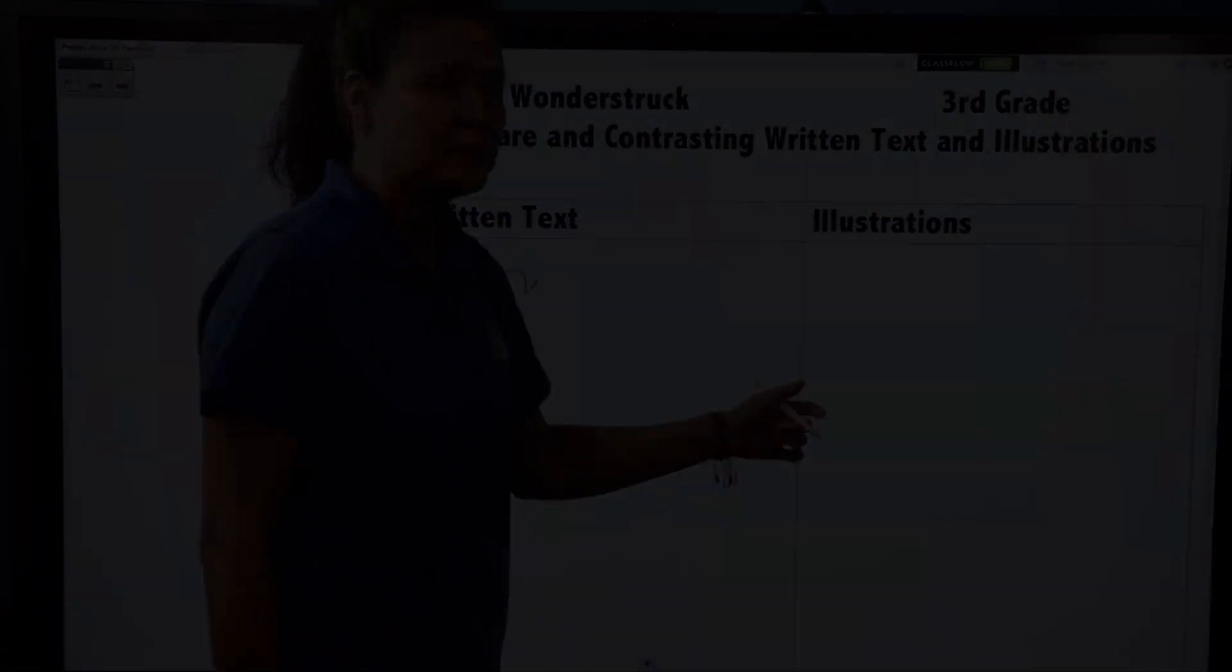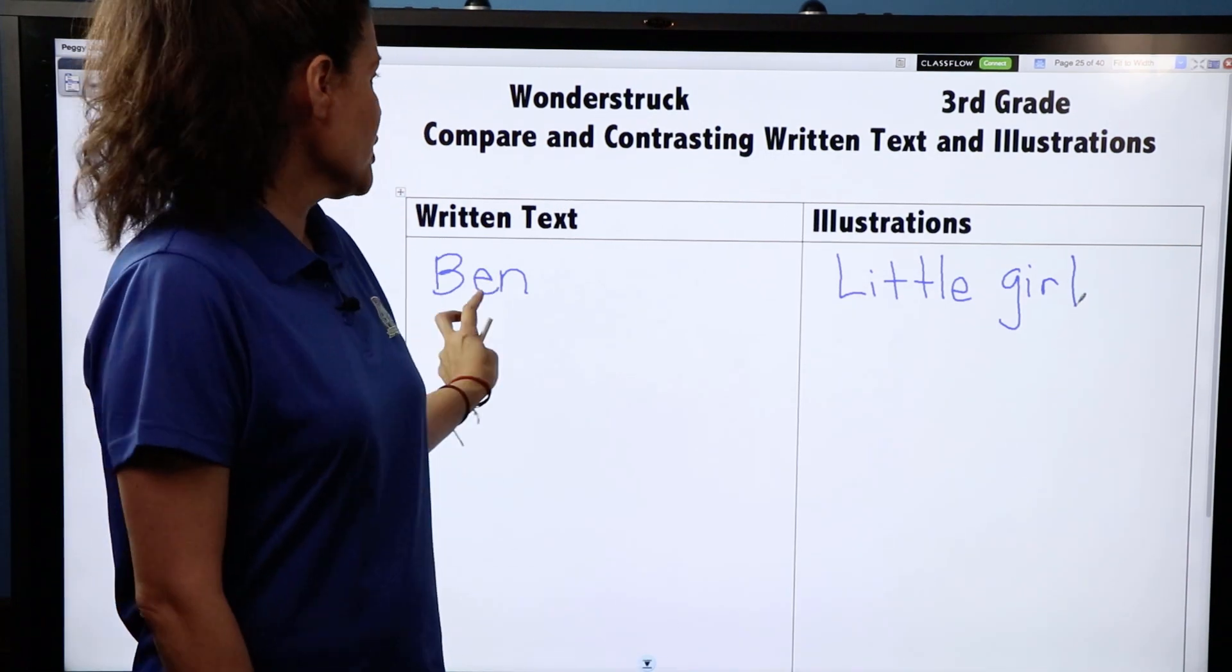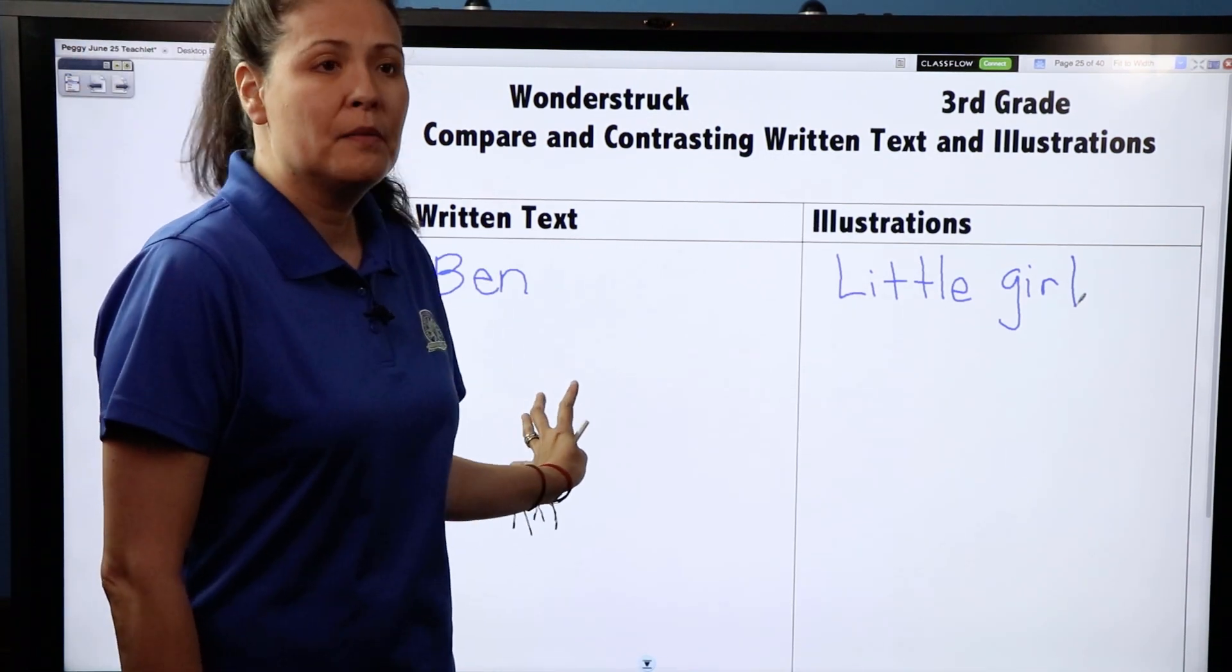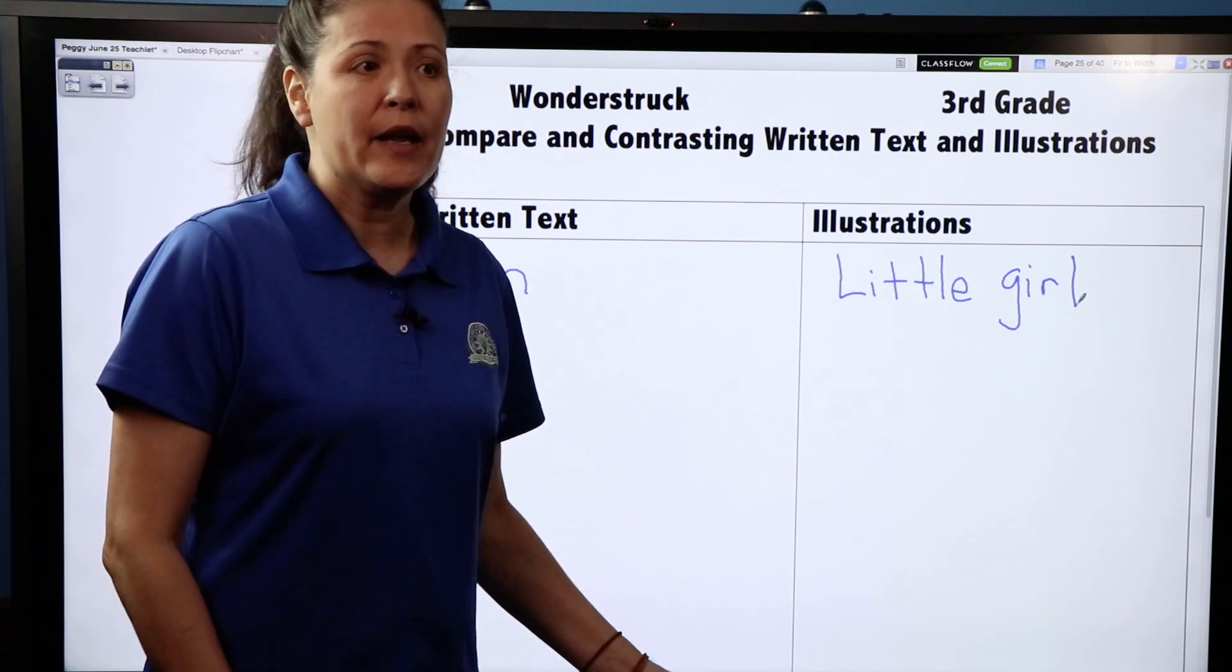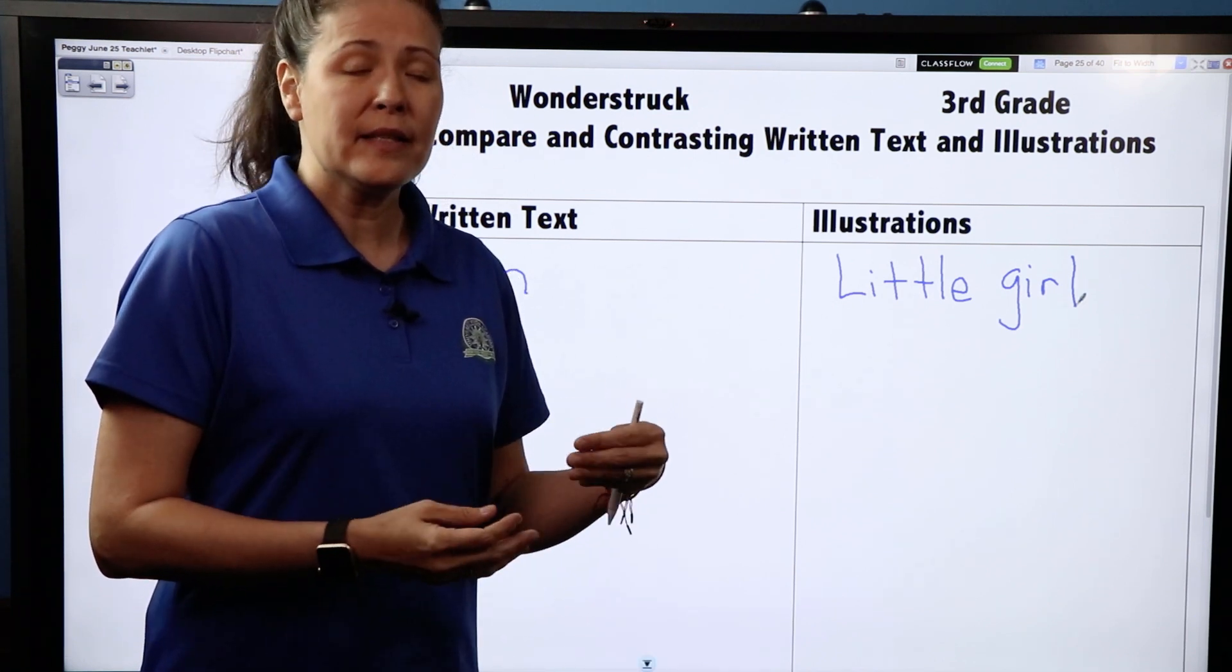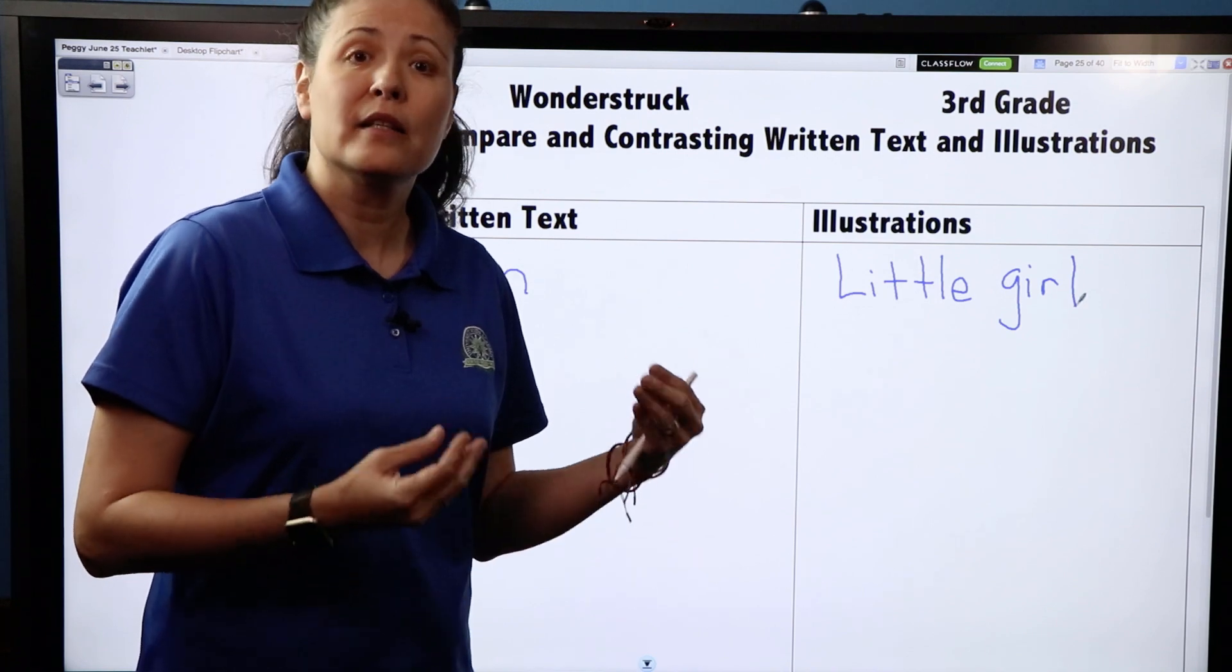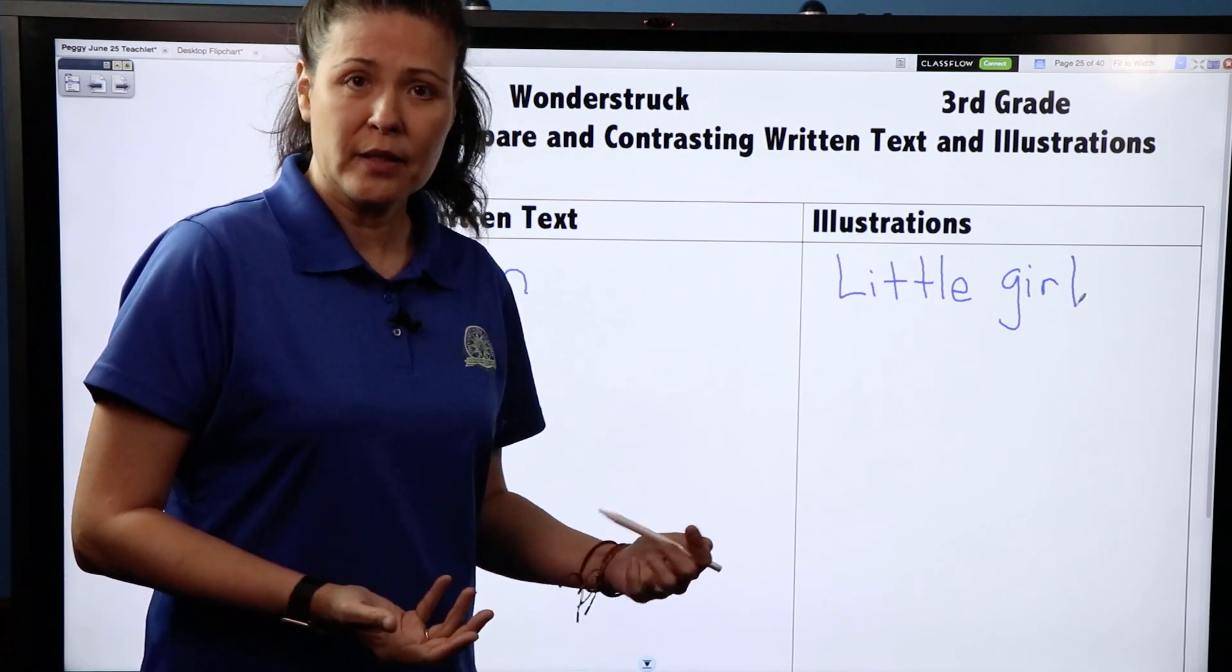Something else we learned about Ben is where he was at. We know he's at Gunflint Lake, and in reading it sounds like Gunflint Lake is a forest or a park. So let's write that down.